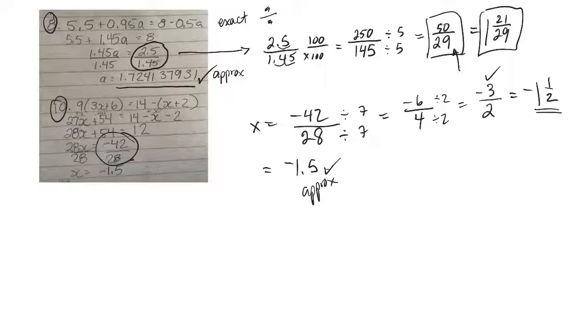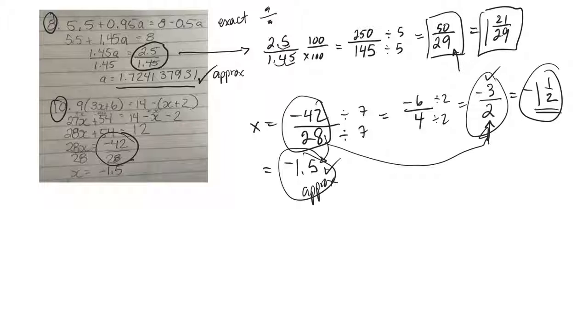And that'd be a mixed number. I sort of like the improper a bit better. But all three of those are correct answers to that question. Hopefully that helps you in converting a decimal to a fraction or an answer, rather than just dividing it and coming up with a decimal, where you can come up with a fraction for it.